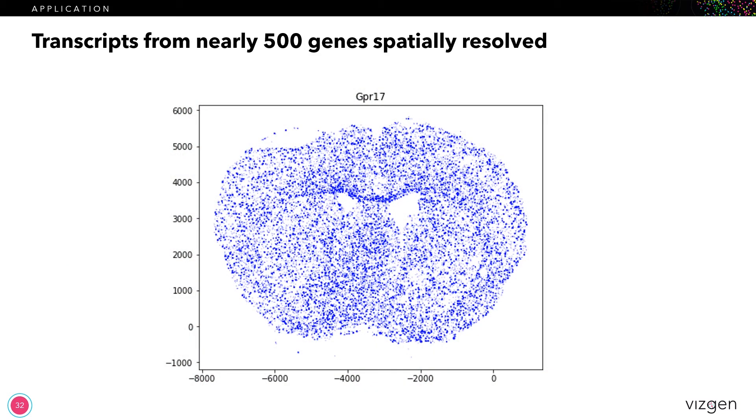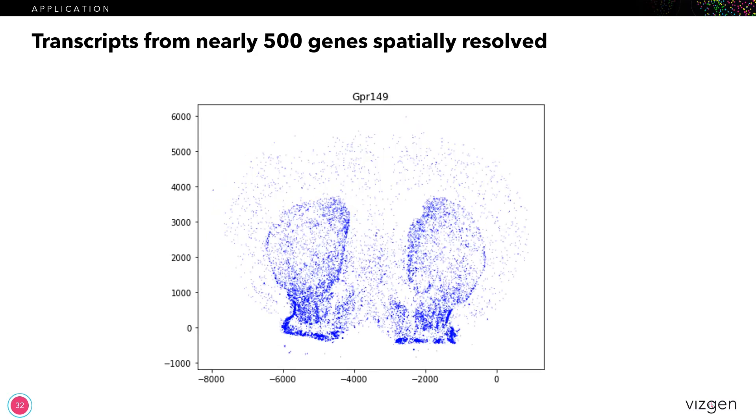And we made a panel of nearly 500 genes, which includes mainly receptor genes, as well as a number of canonical markers. And you can start to see here, as we're showing some of the individual gene expression, some of the interesting organizational patterns within the brain.